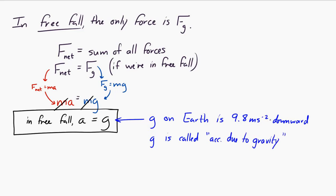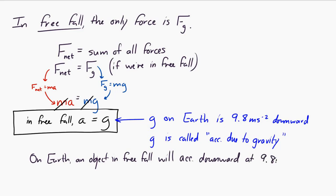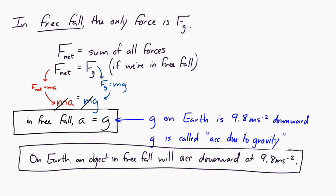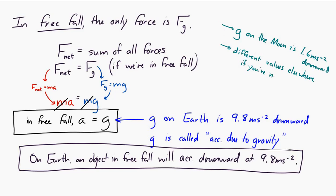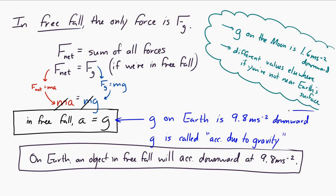On Earth, an object in freefall accelerates downward at 9.8 meters per second squared. g has different values in other locations — on the Moon, g equals 1.6 meters per second squared downward; on the Sun it's different again; and in Earth orbit far from the surface, g has yet another value. But near the surface of the Earth, g equals 9.8 meters per second squared downward.